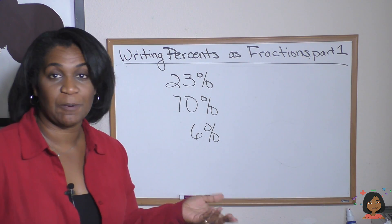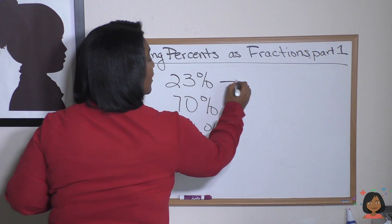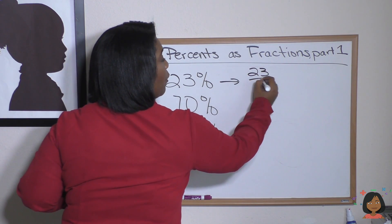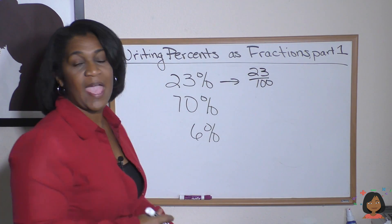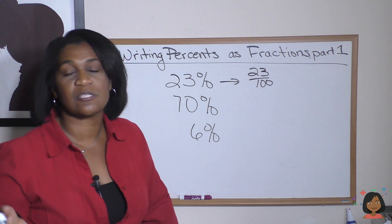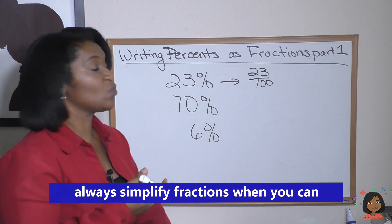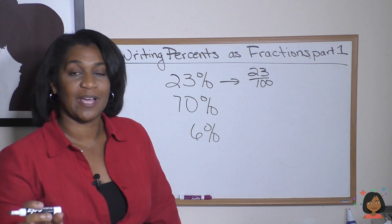I've got three examples here. 23% is the same thing as saying 23 over 100. As we know, with every fraction we look to see if we can simplify. This one we cannot, so 23 over 100 is your answer.